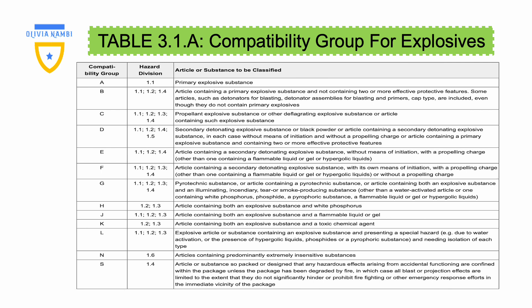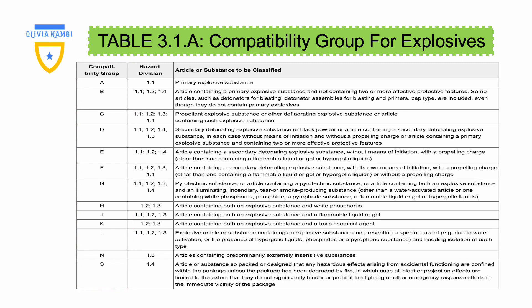I will now expound on table 3.1.a, which illustrates compatibility groups for explosives. The first column gives us compatibility groups A, B, C, D, E, F, G, H, J, K, L, N, and S — giving us a total of 13 compatibility groups.